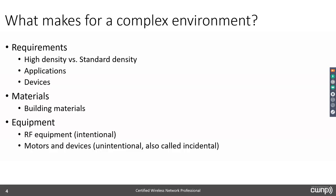Regardless of the density level, you always have to consider the devices and applications that are going to be used on that wireless network. With applications, if you're not using any Voice over IP handsets that are Wi-Fi, and you're not using any other real-time streaming type applications, then you can design a wireless network that's quite different than one designed for real-time applications. With real-time applications, very fast roaming becomes more important. Roaming means your client is moving from one AP to another at layer 1 and layer 2 of the OSI model.